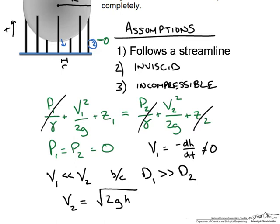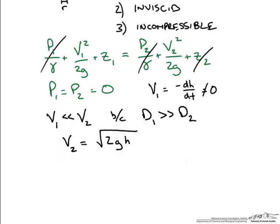At this point we still want a good relationship between v2 and v1, so we bring in the continuity equation, which states that the mass flow rate at point 1 must equal the mass flow rate at point 2. Since the fluid is incompressible the density is constant, so we balance the volumetric flow rates: the velocity at point 1 times the cross-sectional area at point 1 equals the velocity at point 2 times the cross-sectional area at point 2.